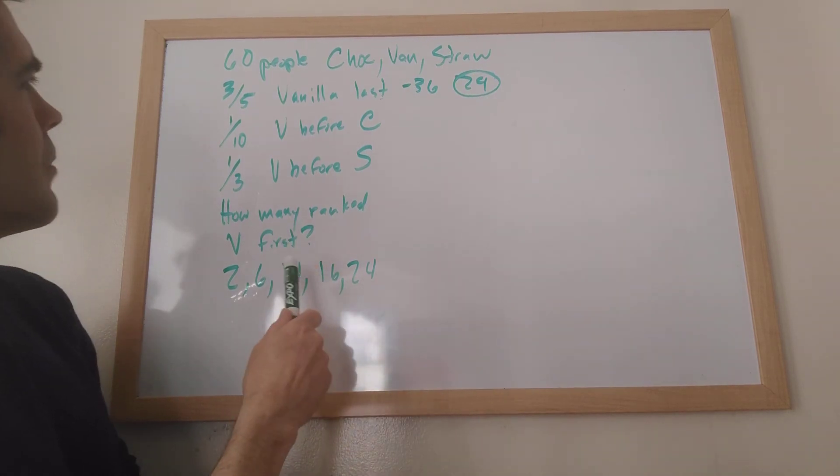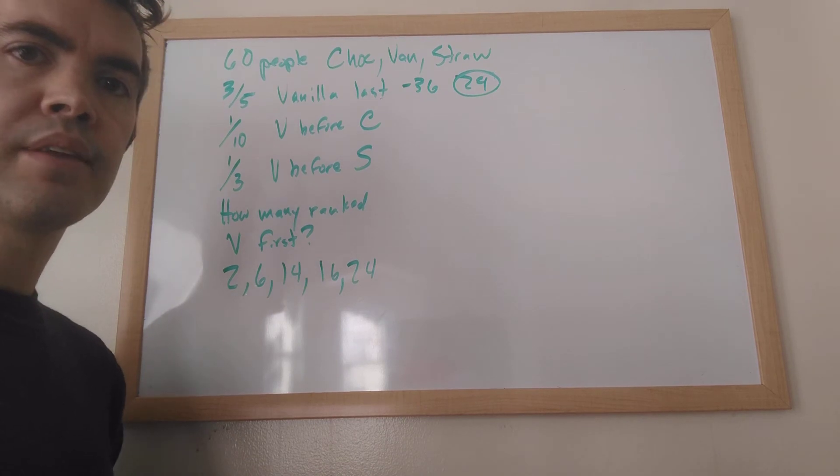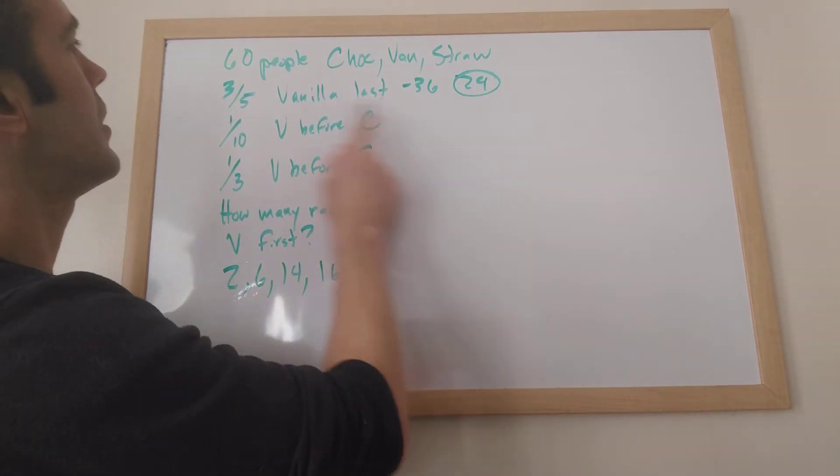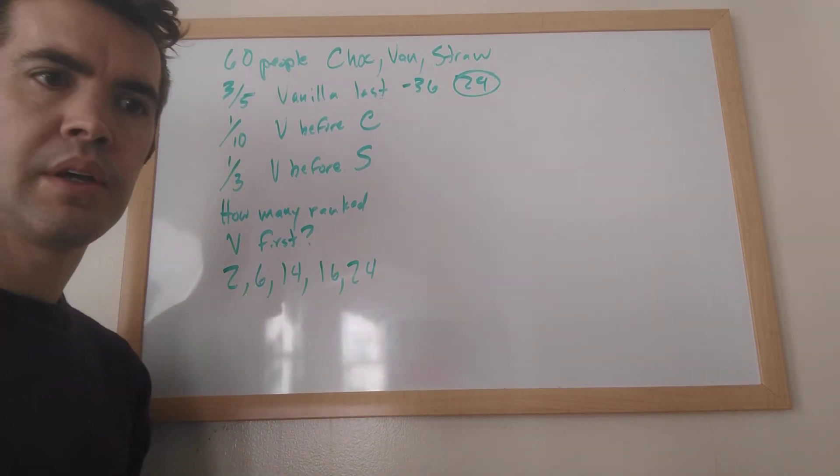All right, so what do we do next? So I think here's the toughest part of the problem is to realize this is actually a double overlapping set problem. Once we've eliminated everybody who says vanilla can't be last, we've got these two types of people.